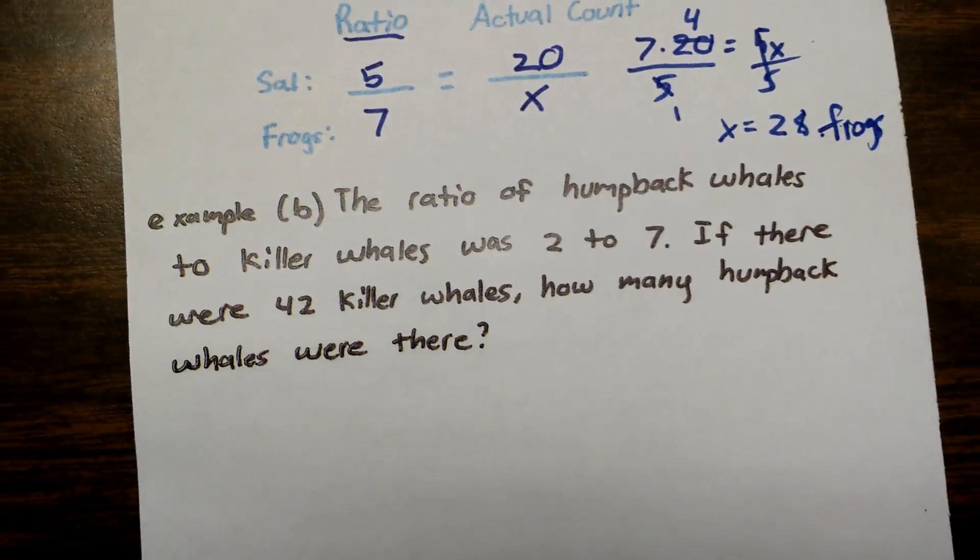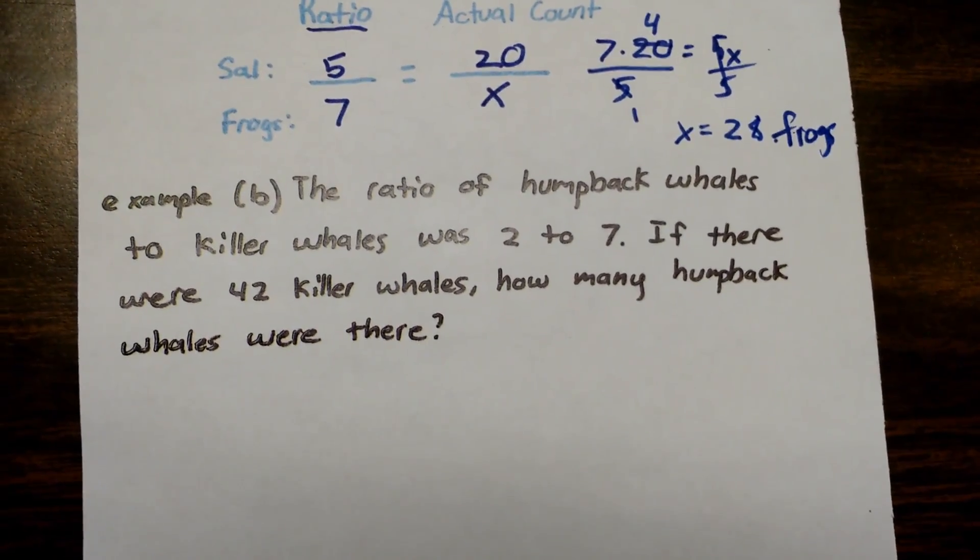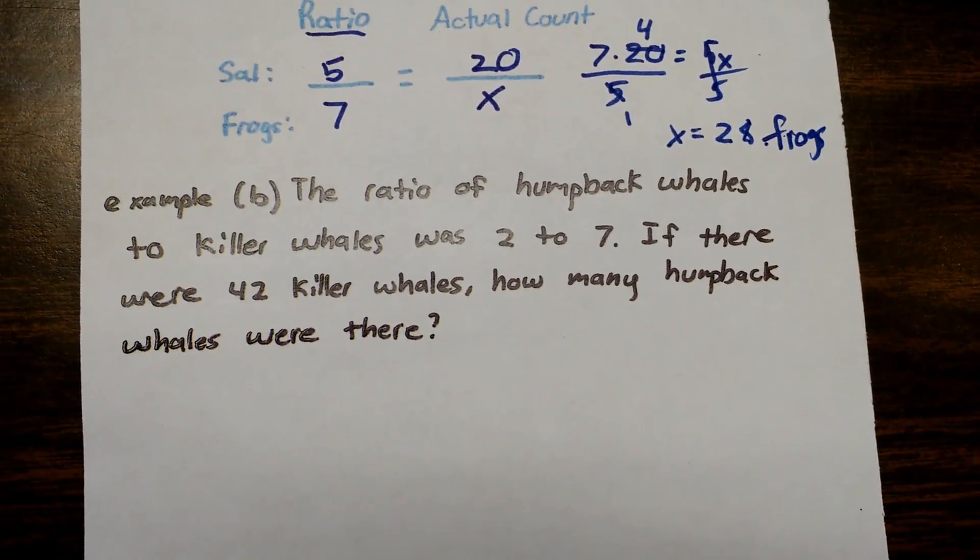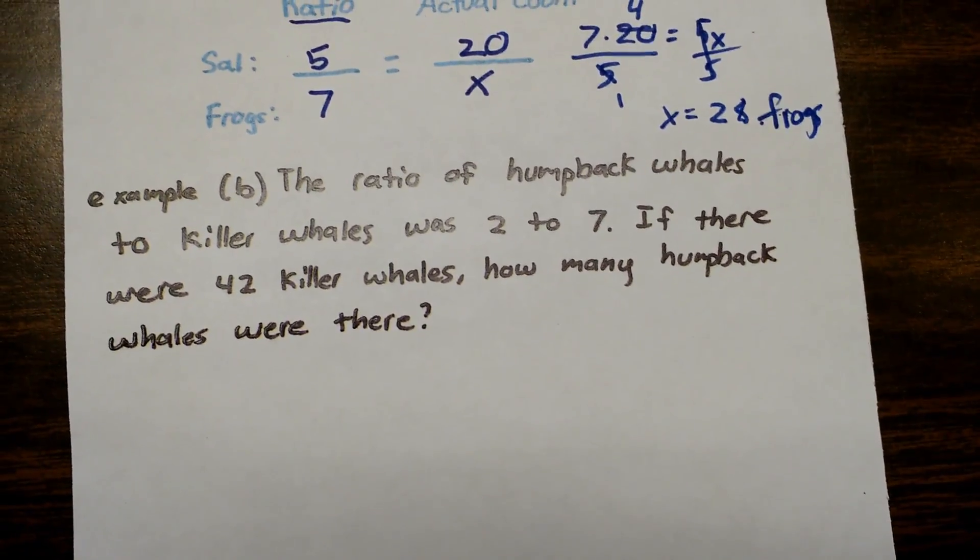The ratio of humpback whales to killer whales was 2 to 7. If there were 42 killer whales, how many humpback whales were there? Alright, try and pause the video and solve this one on your own.